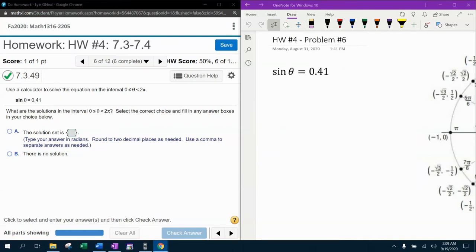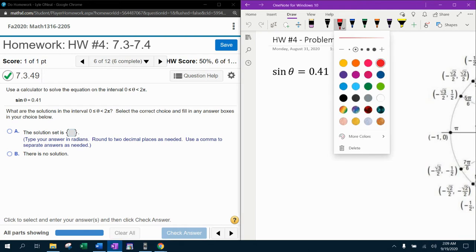All right, here we go. Question number six from our 1316 homework number four in MyLabMath. They want us to use a calculator to solve the equation on the interval from zero to two pi. So that means within one revolution of the unit circle, we're going to be looking for y coordinates of 0.41. Now notice that 0.41, that's not a y coordinate in the unit circle. And that's why they tell us to use a calculator.